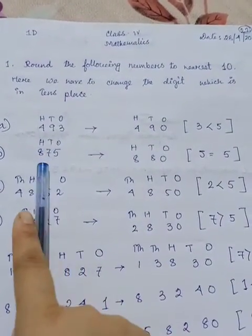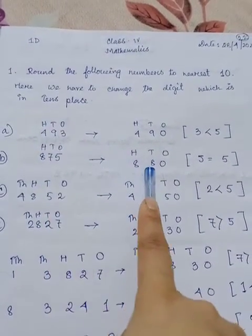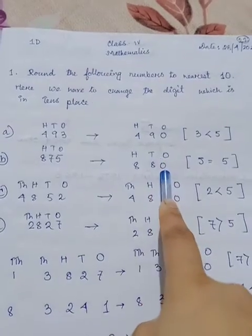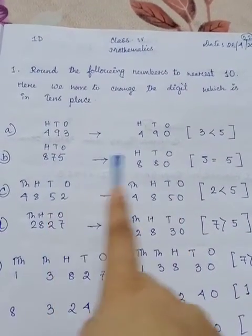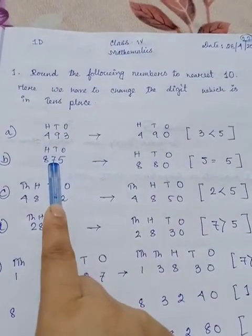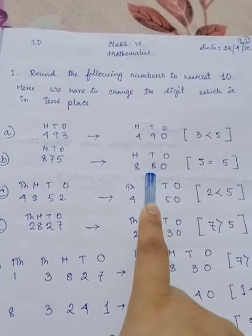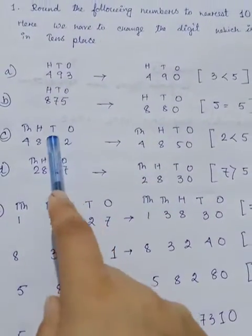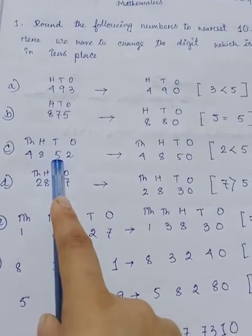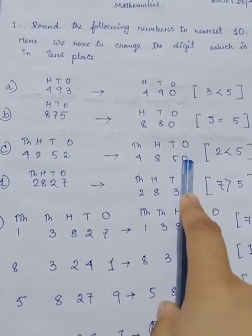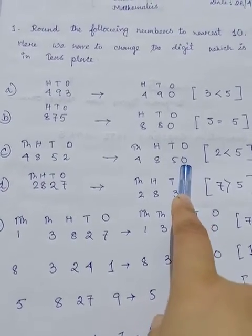See next, 475. At first you have to change the one's place to zero. Five is equal to five, so tens place is 8. Here is 52, at first you have to zero one's place and two.